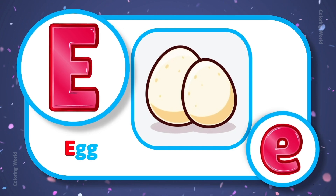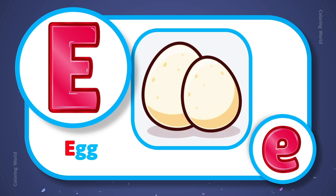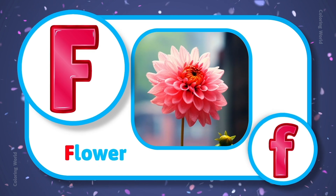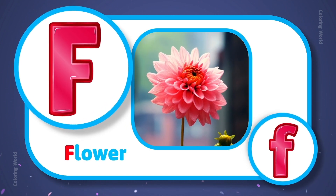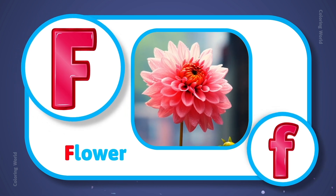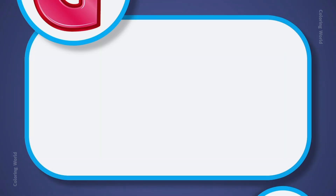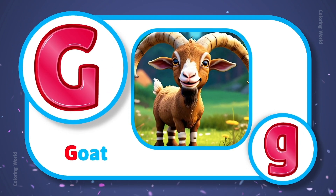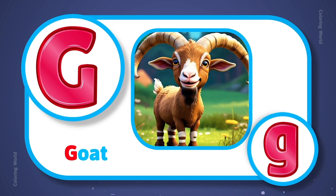E is for egg, E, egg. F is for flower, F, flower. G is for goat, G, goat.